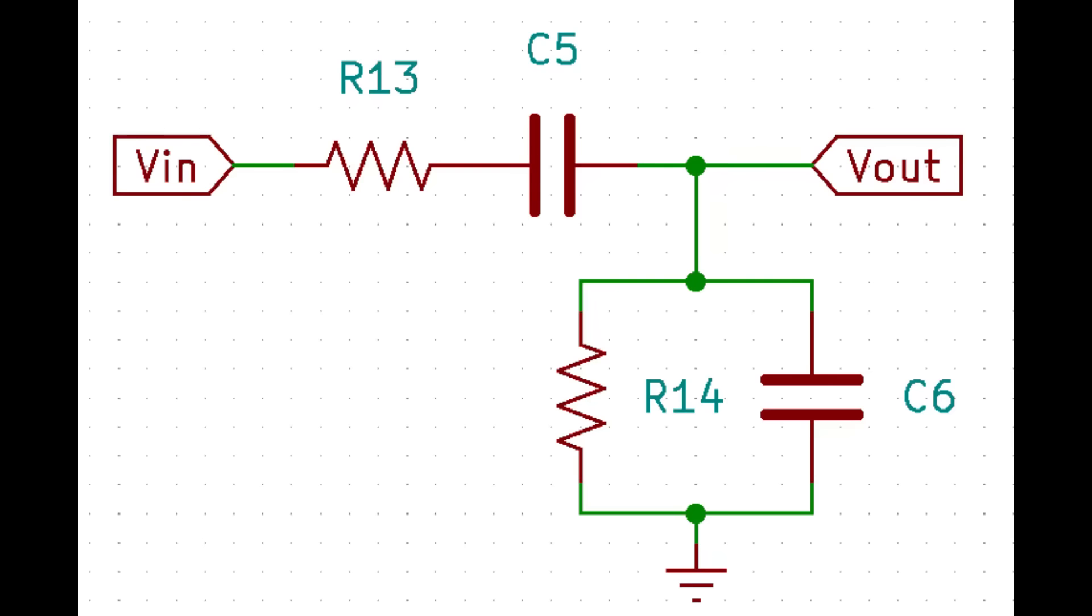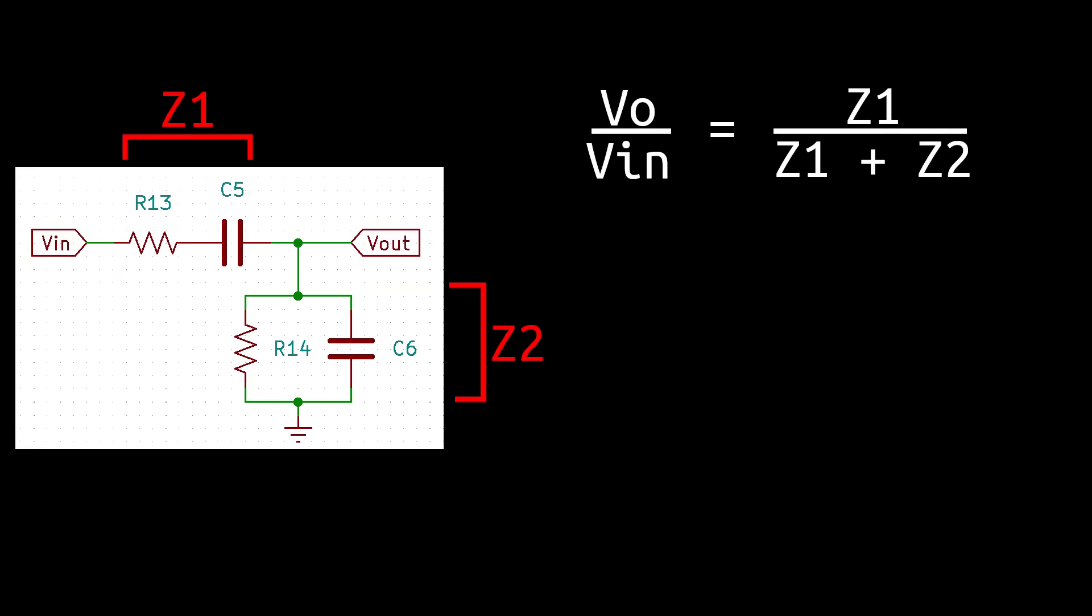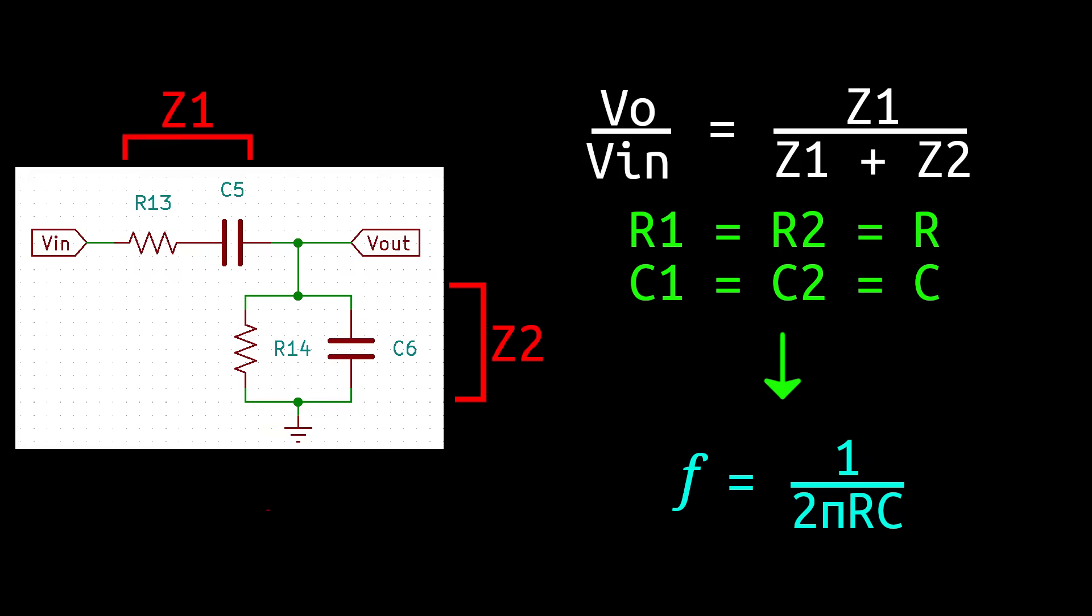We can solve for it by looking at the configuration as an impedance divider, similar to a resistive divider. We can combine each pair of resistor and capacitor into a single impedance, with R1 and C1 being in series with each other, and R2 and C2 being in parallel. We can make a simplification, where both resistances are the same, and both capacitances are the same. And after quite a bit of algebra, we arrive at this equation. The frequency of oscillation is 1 over 2 pi RC. And at that specific frequency, we get a gain of 1 third.